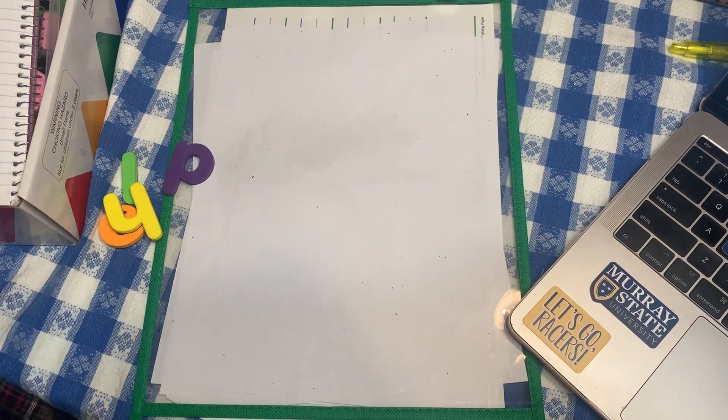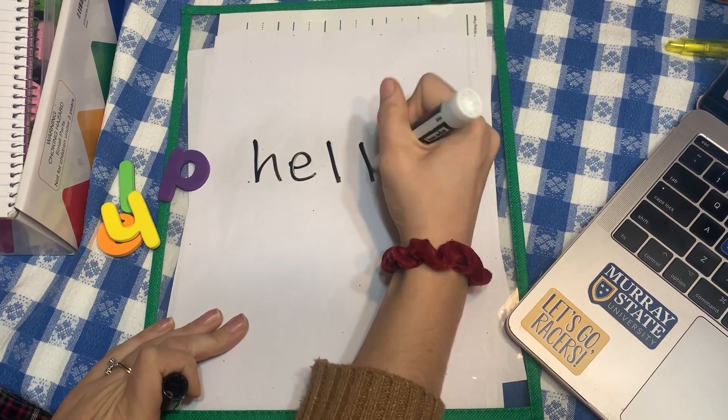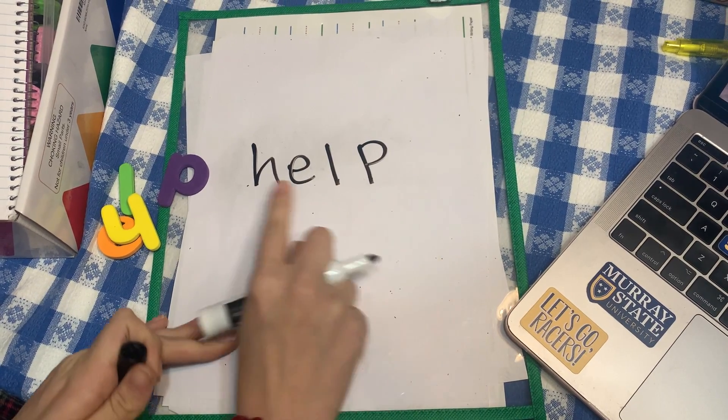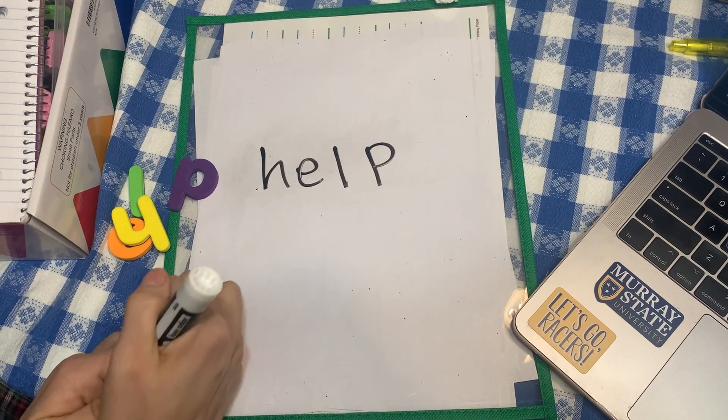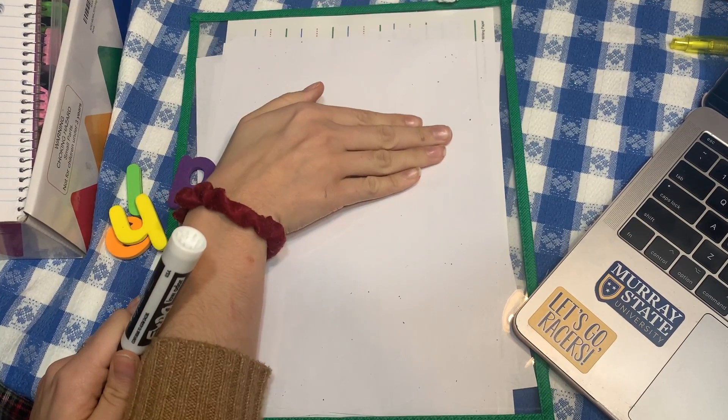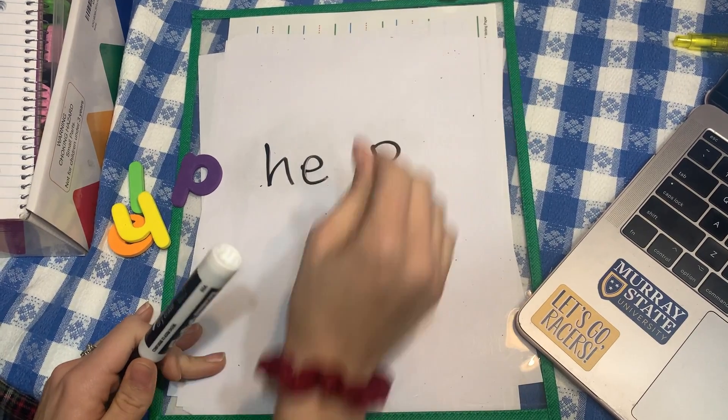So first, you're going to make sure the students have seen and fully sounded out the word. Then you're going to turn the word away from the students so the students can't see it while you wipe away a letter.